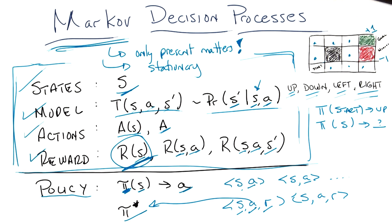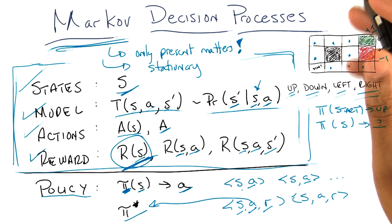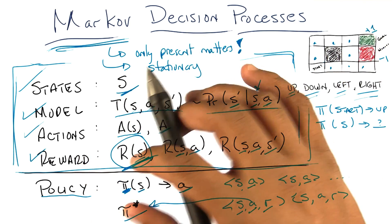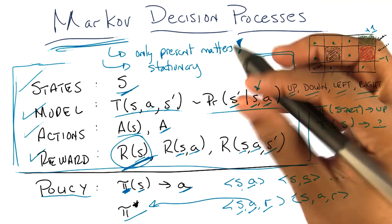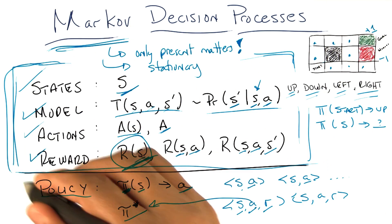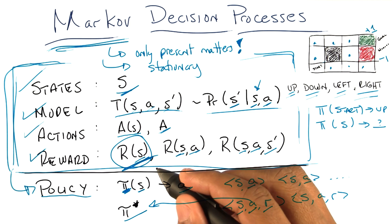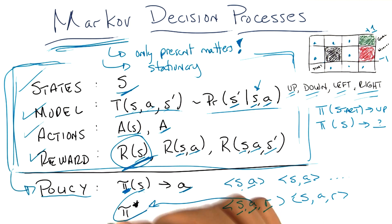A lot of what we're going to be talking about next is: given that we have an MDP, a Markov decision process defined like this, how do we go from this problem definition to finding a good policy — and in particular, finding the optimal policy? That makes sense. Good.